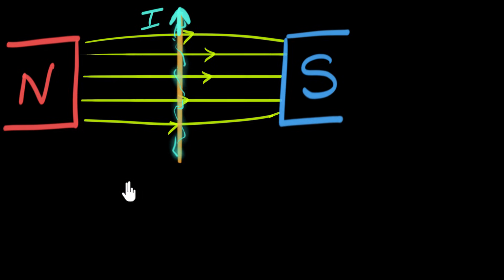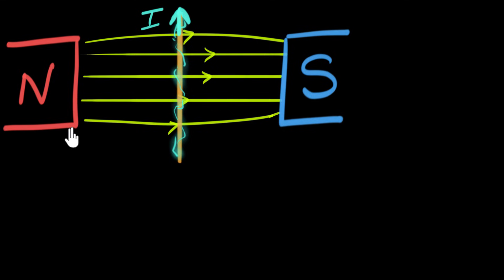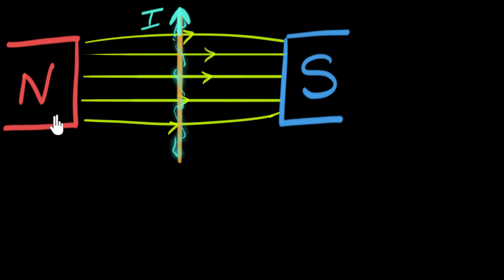So how do we do this? All we need to do is use Newton's third law. Newton's third law says every action has an equal and opposite reaction. The wire is pushing on the magnets — we can call that the action. Then the magnets push on the wire — we call that the reaction.